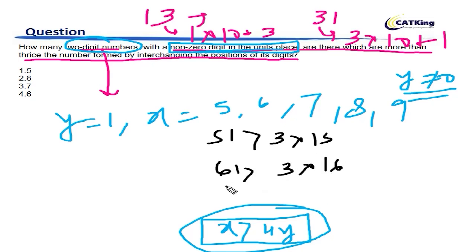61 is greater than 3 into 16, and so on and so forth for 71, 81, and 91 also. For y is equal to 2, the only possibility is x is equal to 9, because you can say that 92 is greater than 3 into 29.